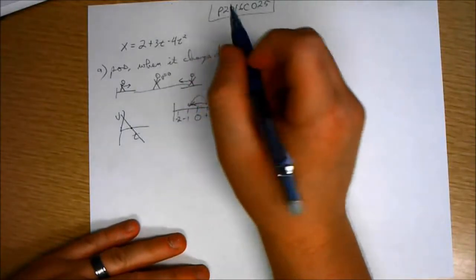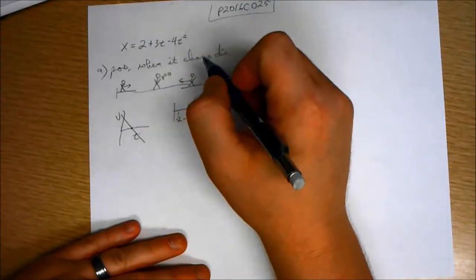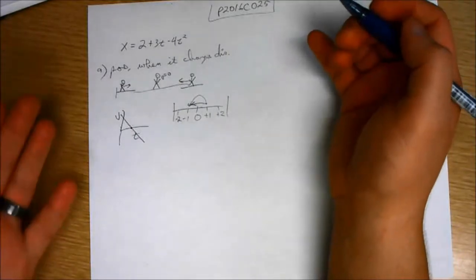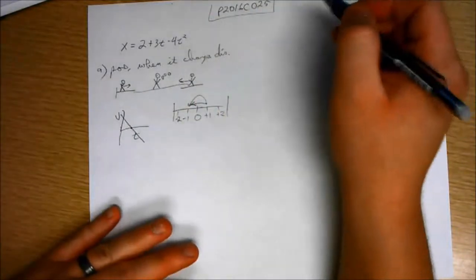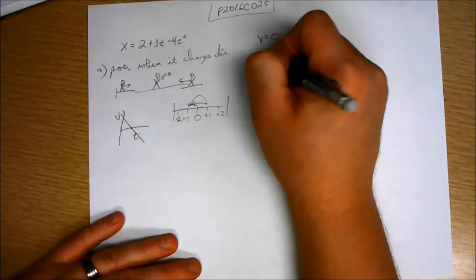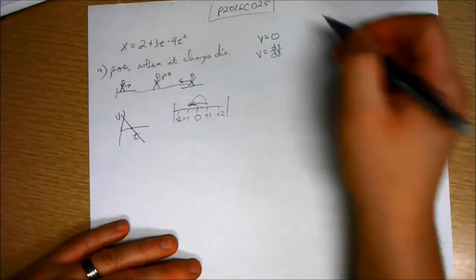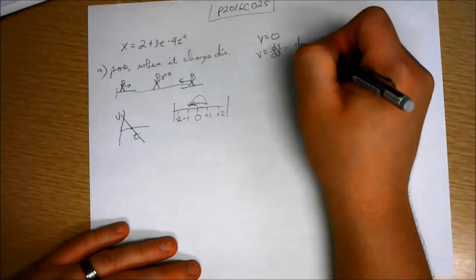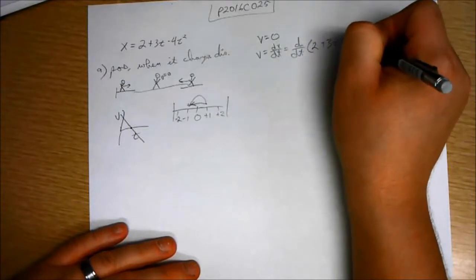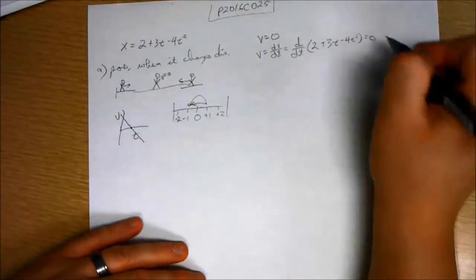Alright, so if we know that the velocity has to equal zero, that's the added information that we add to this problem to solve it. We have the position function and we know that the velocity is equal to zero. The velocity is equal to dx/dt, that's instantaneous velocity, or d/dt of the position function 2 plus 3t minus 4t squared. And that's all equal to zero.